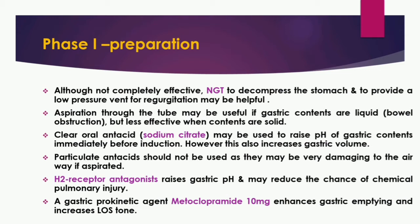Aspiration through the tube may be useful if gastric contents are liquid, as in bowel obstruction, but is less effective when the contents are solid. Use of a clear oral antacid such as sodium citrate may be used to raise the pH of gastric contents immediately before induction. However, this also increases the gastric volume. Particulate antacids should not be used, as they may be very damaging to the airway if aspirated.